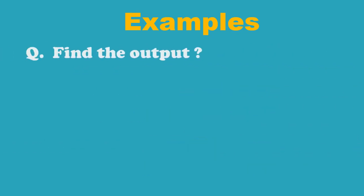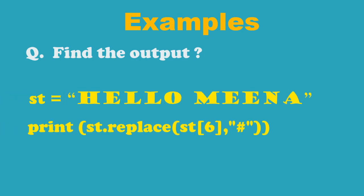Now we will look at some questions which can be asked on string functions. One of the question that can be asked is to predict the output. Here since indexing starts with 0, m will get replaced with hash and the output will be as shown.